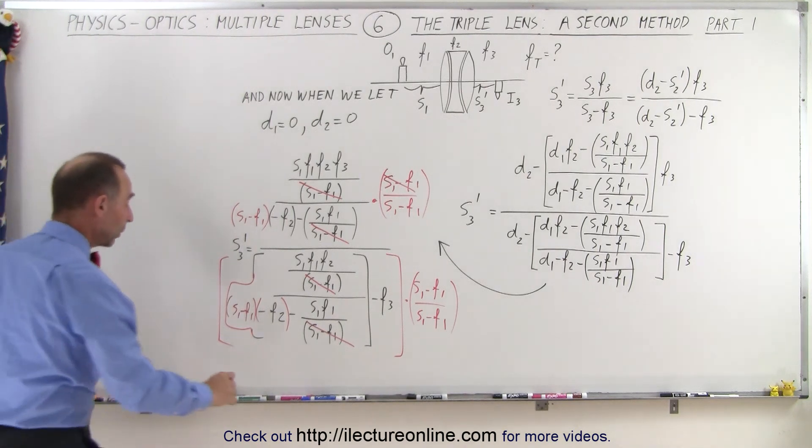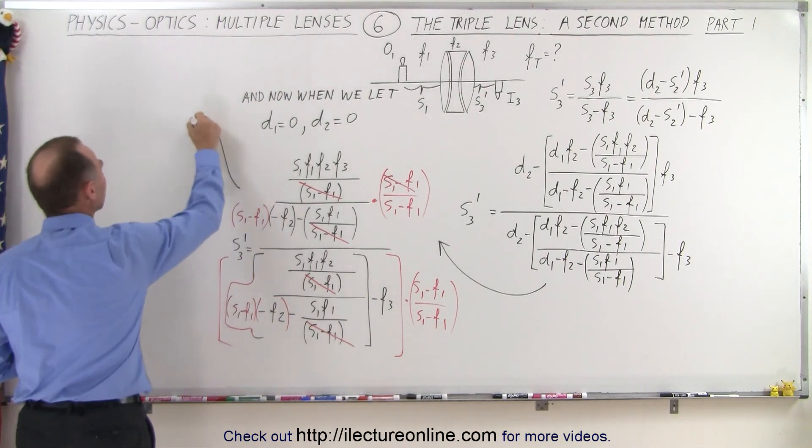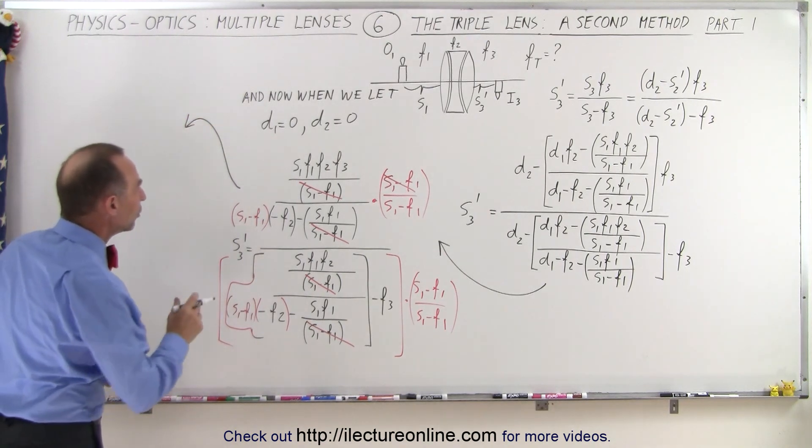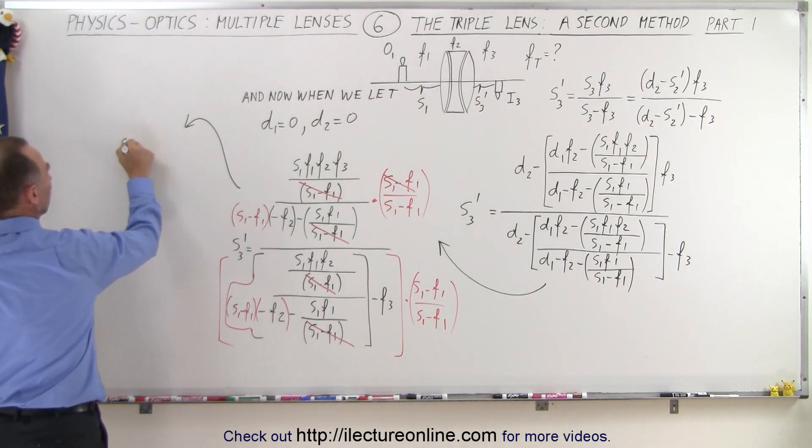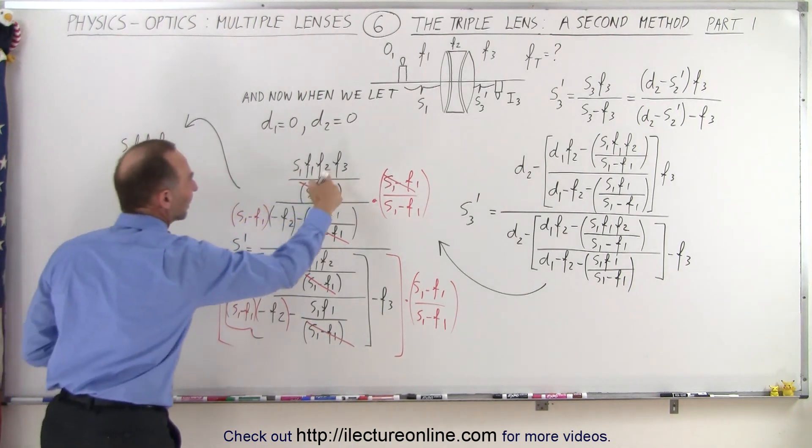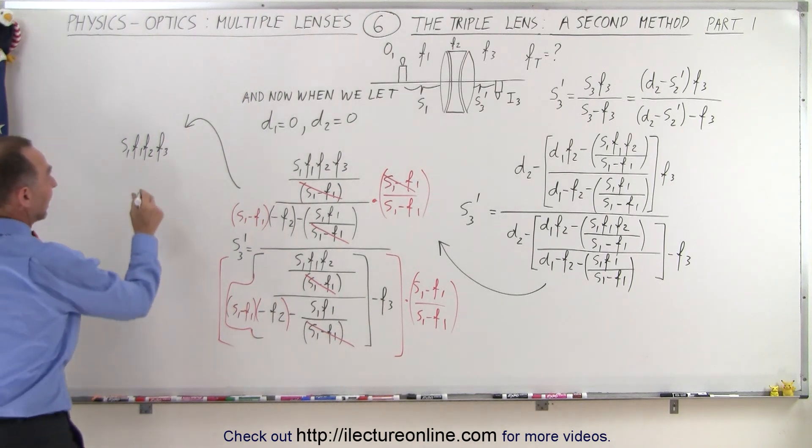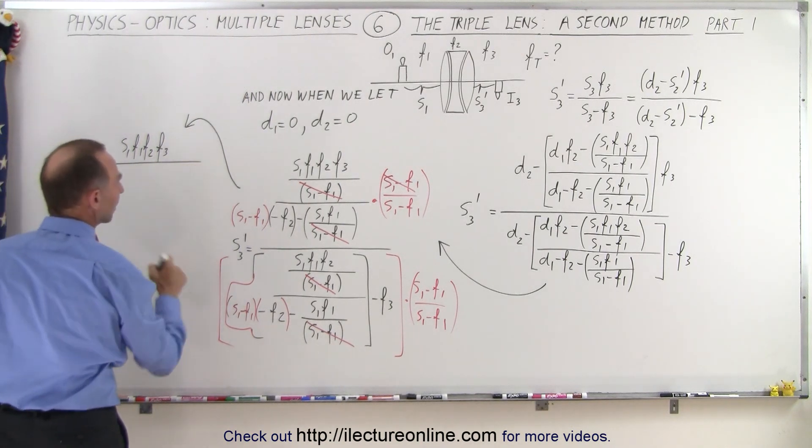Now, let's see what that equation simplifies to next. So over here, we'll rewrite the equation. In the numerator, we end up with an S1, F1, F2, F3, and whenever we have that like that, that looks promising because we know we end up with something like that. In the denominator,